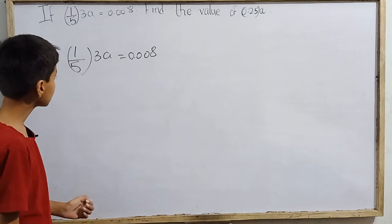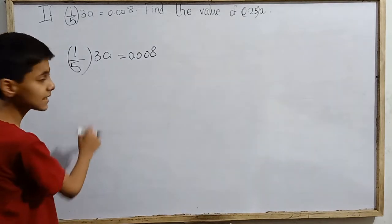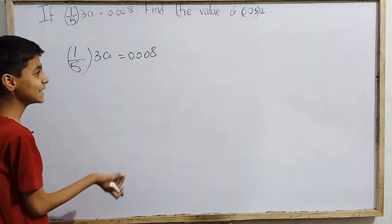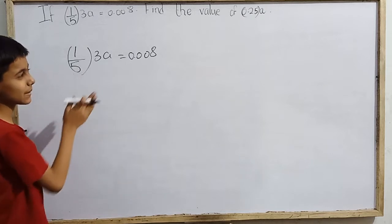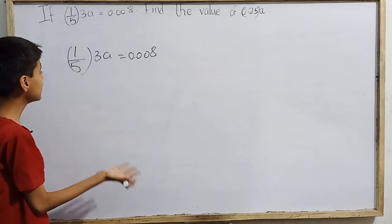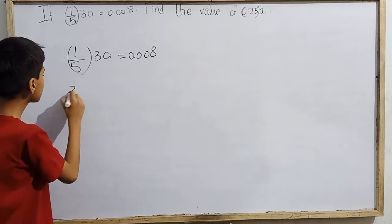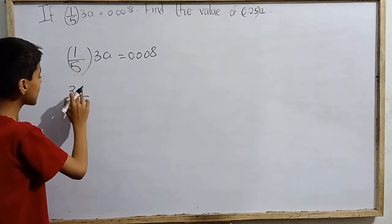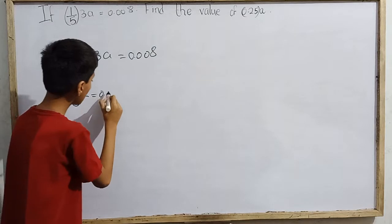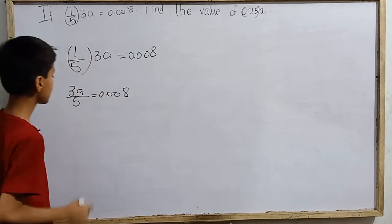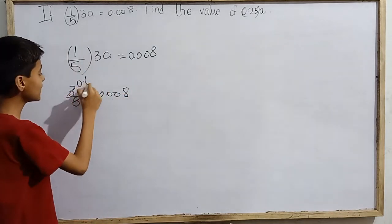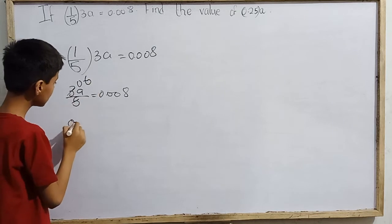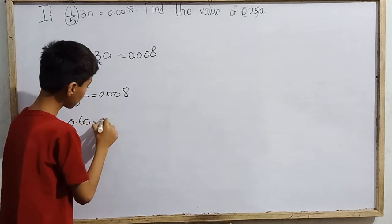We can just know that by trying some mathematical operations. But first of all, this you can write as 3a by 5 which is 0.008. Now this is 0.6 times, meaning that 0.6 into a is 0.008.